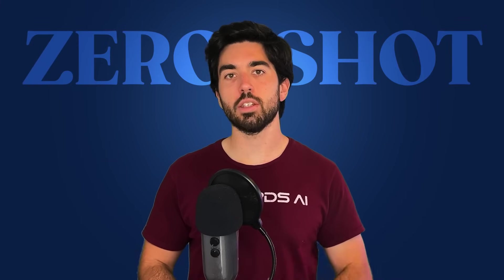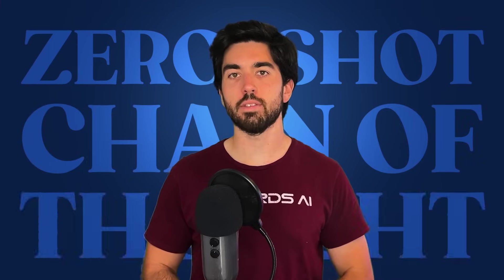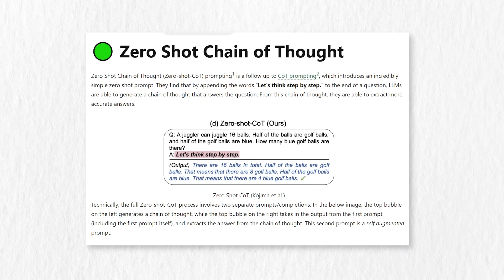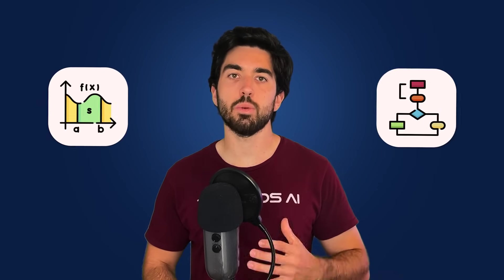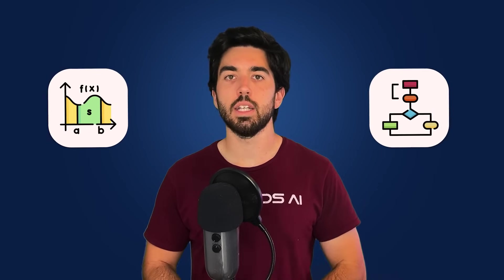Another great technique for more complex applications requiring reasoning is called Zero-Shot Chain of Thought, where you ask your model to split a complex query into simpler ones by telling it a super simple sentence like 'think step by step.' This is mainly helpful for math or logic-related questions and can be tremendously helpful to improve results in those cases.